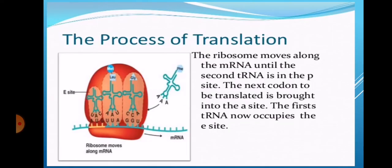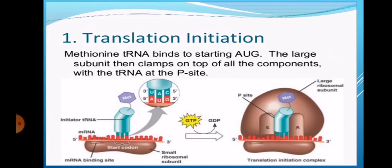The process of translation. The ribosome moves along the messenger RNA until the second tRNA is in the P site. The next codon to be translated is brought into the A site. The first tRNA now occupies the E site. Now we start to learn the translation process. First stage is initiation stage. Methionine tRNA binds to starting AUG. The large subunit then clamps on top of all the components with the tRNA at the P site.